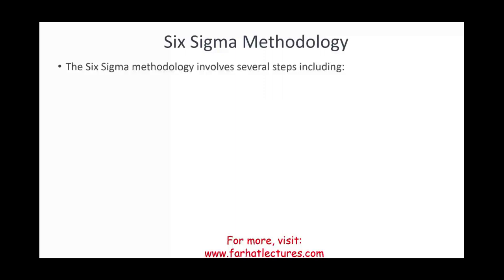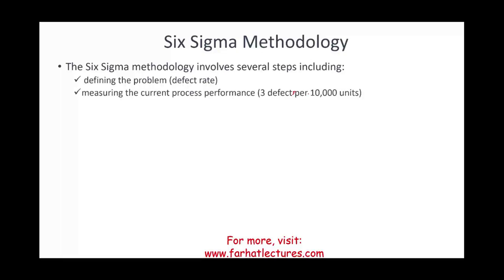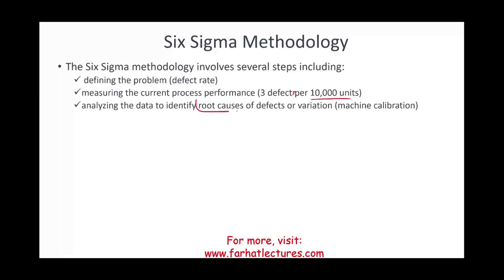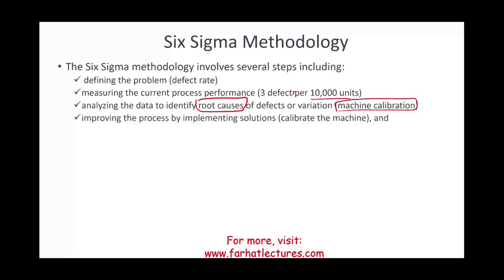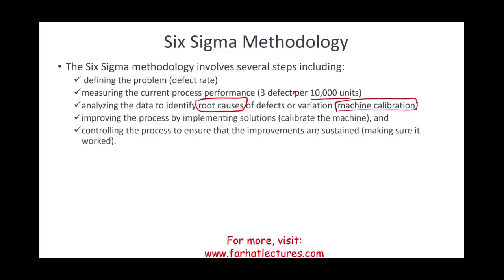The Six Sigma methodology requires several steps. The first step is to define the problem — for example, we have a high defective rate. Next, measure the current performance: we have three defects per 10,000 units. Then, analyze the data to identify the root causes — why are we having three defects per 10,000 units? Let's say we identify it's machine calibration; the machines need to be calibrated better. Next, improve the process by implementing the solution — we calibrate the machines. Finally, control the process to ensure the improvements are sustained, making sure the defect rate went down.